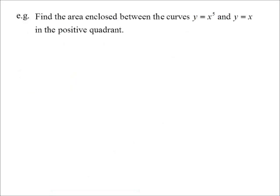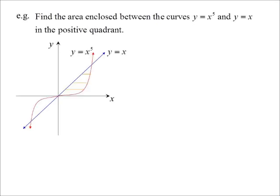We're going to find the area enclosed between y equals x to the power of five and y equals x, in the positive (first) quadrant. There's y equals x, and y equals x to the fifth — very flat at the base, steep at the sides. A diagram is important because you need to know which one's on top. This one: I'll be integrating x minus x to the fifth. If I got it the wrong way round and did x to the fifth minus x, I'd get a negative answer — so always draw a rough sketch.